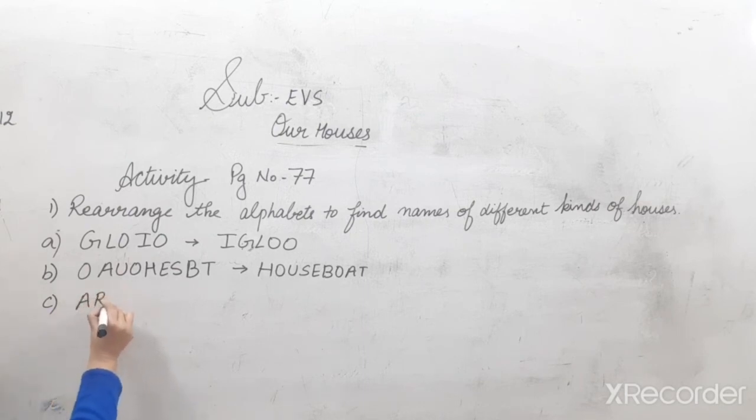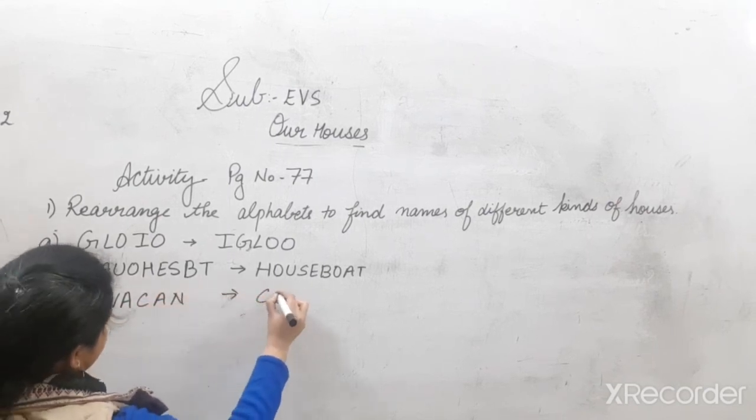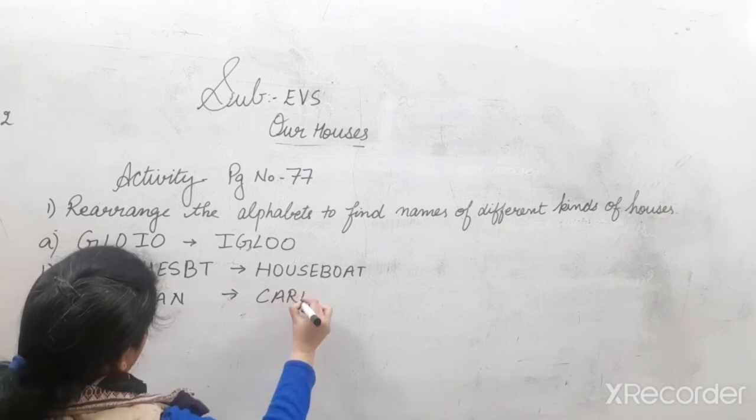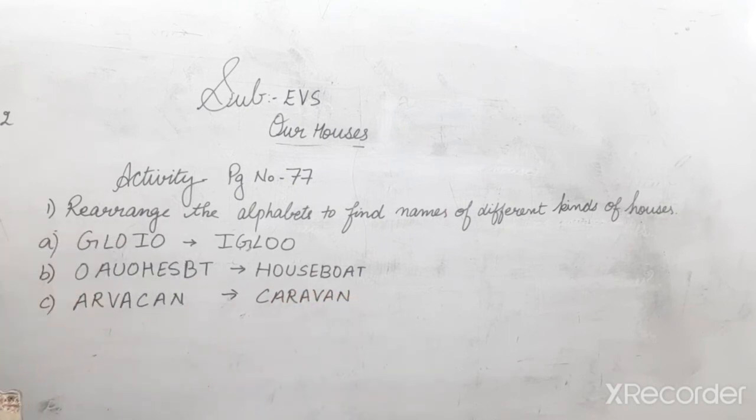C, A, R, V, A, C, A, N. Answer is C, A, R, A, V, A, N. Caravan.